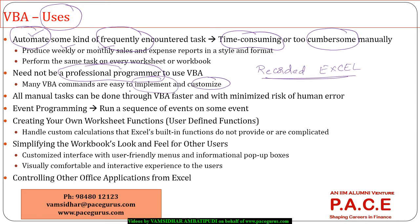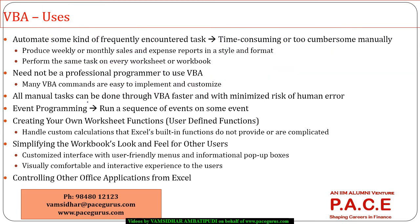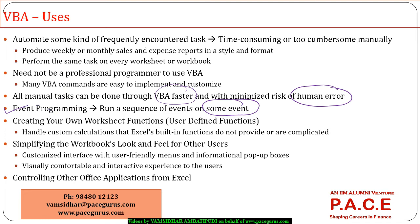Every task that is done manually can be done by VBA — the difference is VBA is much faster, and because it's handled by the system, the scope for human error is much lesser. There is also a possibility to perform event programming, where a sequence of activities is performed based on some event happening — like when you open a sheet, some activities happen automatically, or when you click a button, some activities happen in the background. This event programming is very difficult to accomplish in plain Excel.